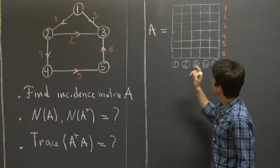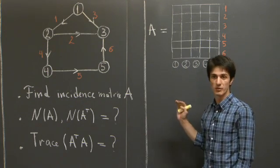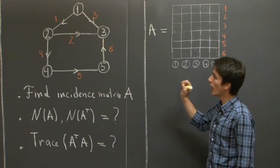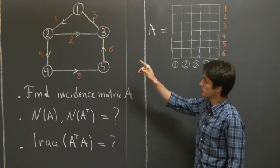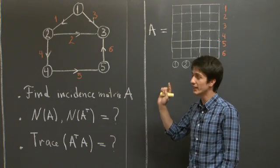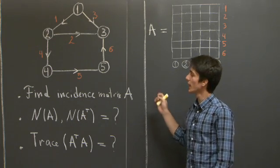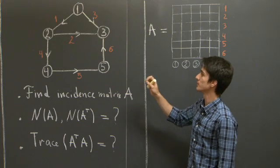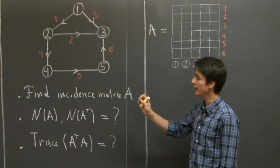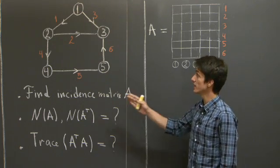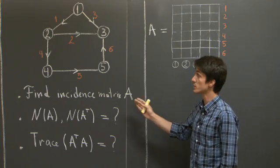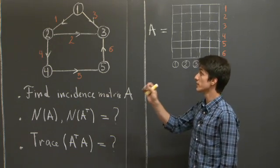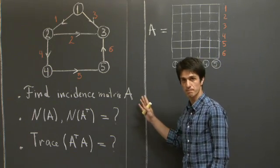And we're going to fill in the rows as follows. We're going to use only negative 1, 1, and 0. And we're going to put a negative 1 in entry i, and 1 in entry j, if the corresponding edge connects node i to node j.